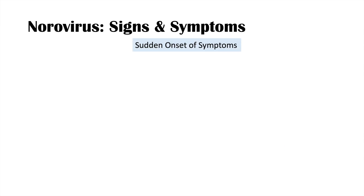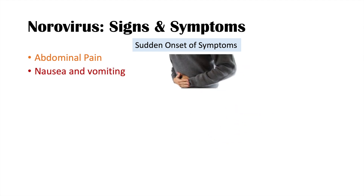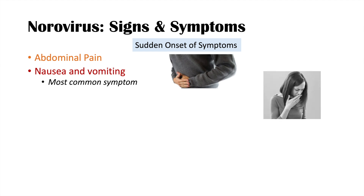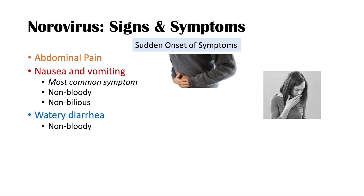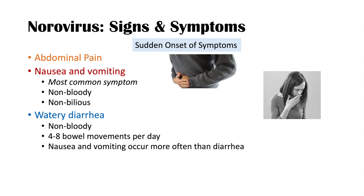After the incubation period, signs and symptoms of the norovirus occur suddenly with an abrupt onset. The most common symptoms include abdominal pain described as cramping, and nausea and vomiting — which is actually the most common symptom. The vomiting is non-bloody and non-bilious. Watery, non-bloody, moderate diarrhea is also seen, with approximately four bowel movements per day. Key to norovirus is that nausea and vomiting occur more often than diarrhea — if a patient has more vomiting than diarrhea, norovirus is the more likely cause.